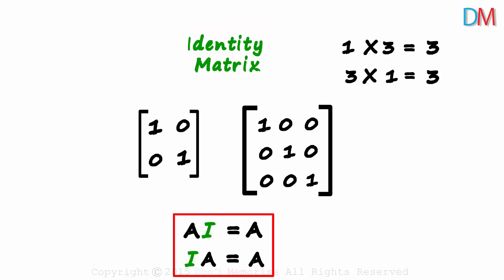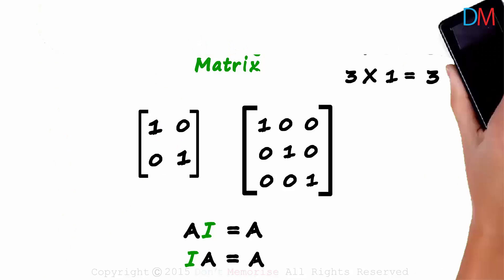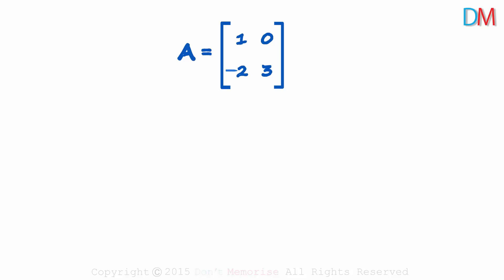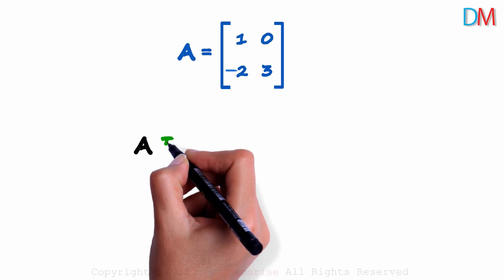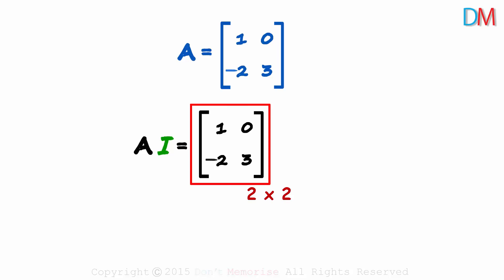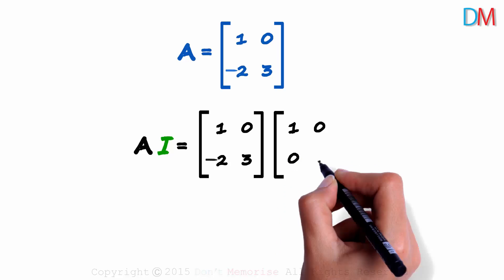Will this always work for any square matrix? If the order of the identity matrix is the same, then yes, it will always work. Let's look at a matrix on a new page. This is matrix A. We need to check if A multiplied by I gives us A. As this is a 2 by 2 matrix, the identity matrix will also be 2 by 2: 1, 0, 0, 1.